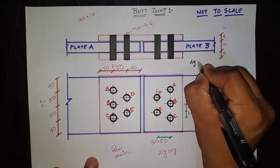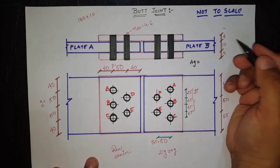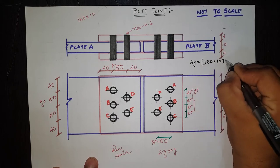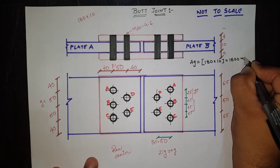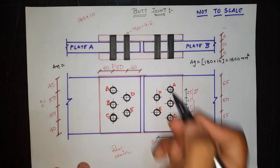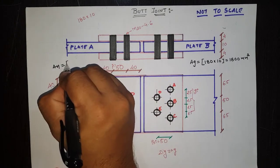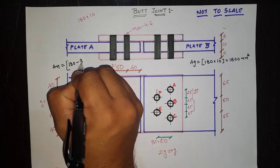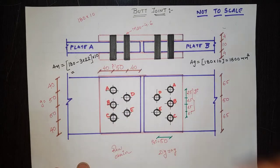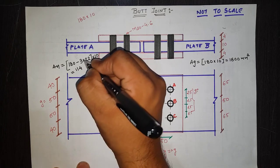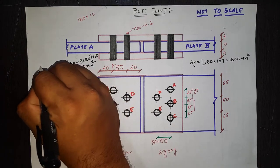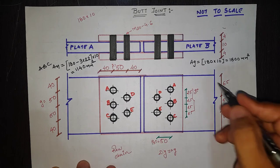For the calculation work: gross area Ag = 180 × 10 = 1800 mm². For net area An along path A-B-C (three bolts), An = (180 − 3 × 22) × 10 = 1140 mm², where 22 mm is the bolt hole diameter.